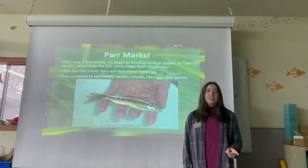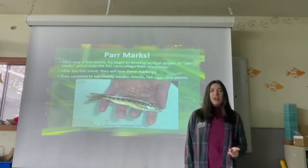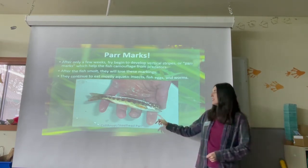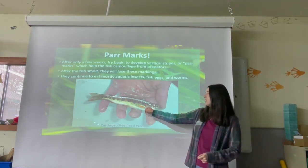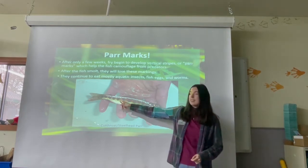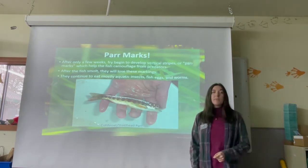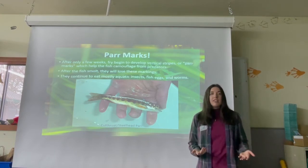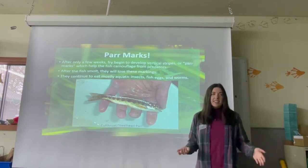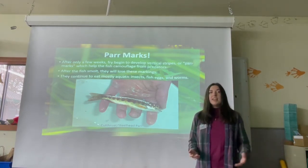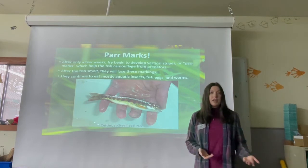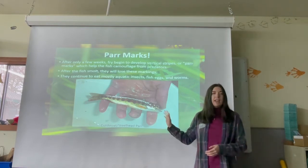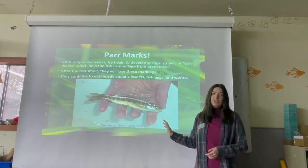One of the key features of the parr phase is that salmon start to develop markings on their bodies. You can see on this picture these stripes and spots along the side, known as parr marks. These help our salmon blend in with their surroundings — excellent camouflage in the stream to protect themselves from predators. Once they smolt, they'll lose these markings, but for now, parr marks help them out a lot.